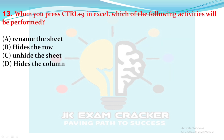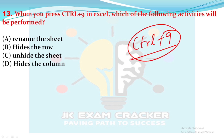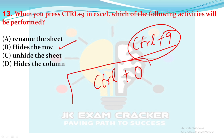Question 13: when you press Ctrl+9 in Excel, which activity is performed? Ctrl+9 hides the selected row. If you want to hide a selected column, you press Ctrl+0. These two shortcuts are important and come up frequently in exams, so remember to keep them in mind.